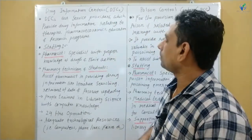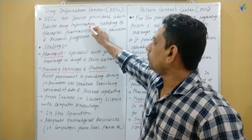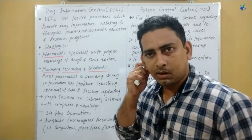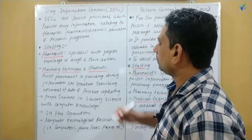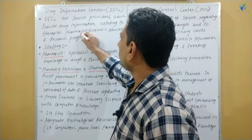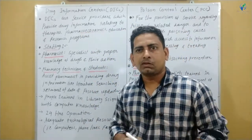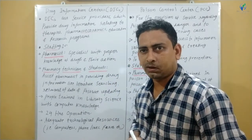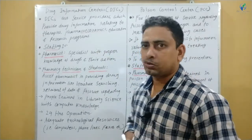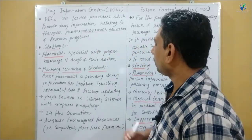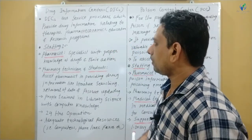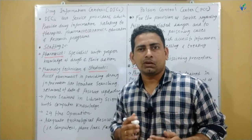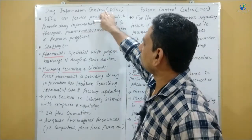Drug Information Centers are service providers which provide drug information relating to therapists. This means drug therapies — they will get information from here. Another thing is Pharmacoeconomics, which means drug therapy, drug cost, comparison, and cost-effective drugs. They will also get information related to education and research programs. We can have such information from the Drug Information Center.